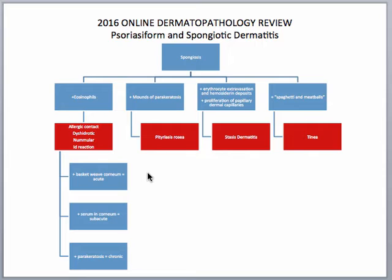If we have a lot of spongiosis along with a basket weave stratum corneum, which is what we see in normal skin, that would be indicative of a more acute process, because it hasn't been going on long enough to change the stratum corneum. If you have a moderate degree of spongiosis in conjunction with serum in the stratum corneum, that's what we would call more of a subacute process.